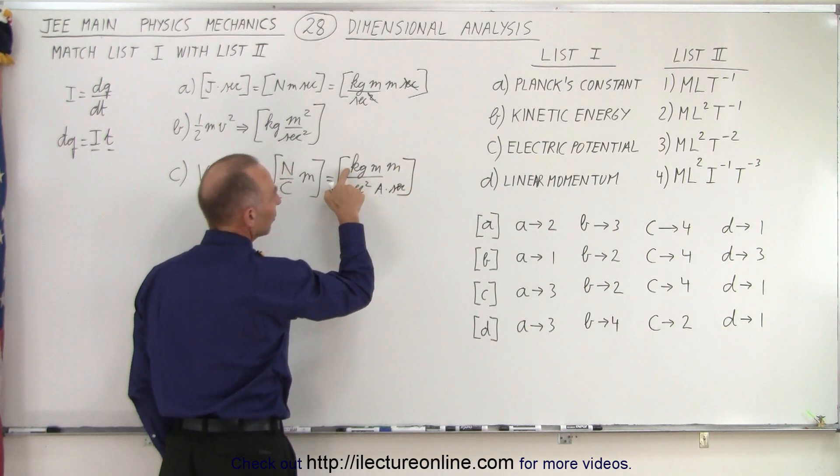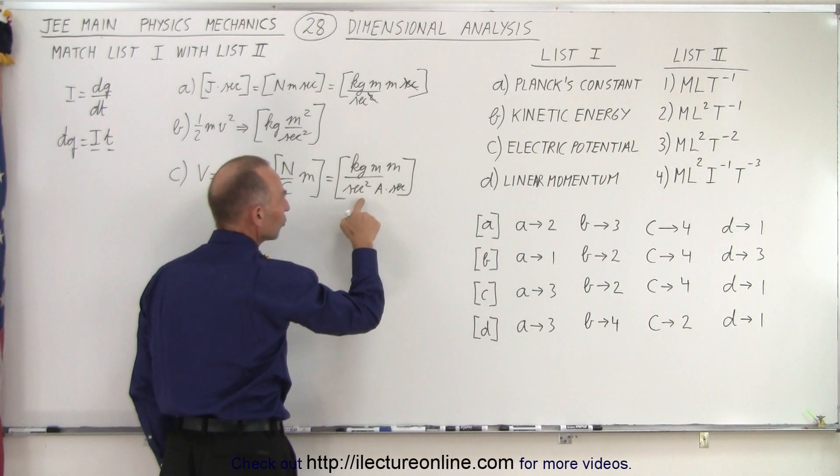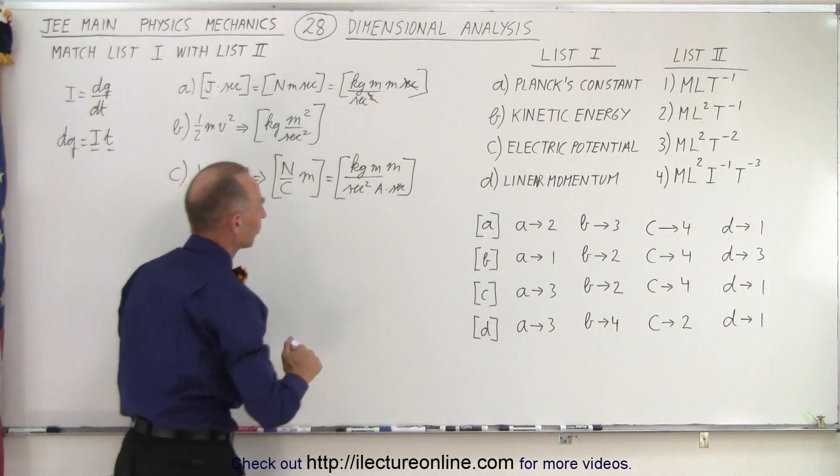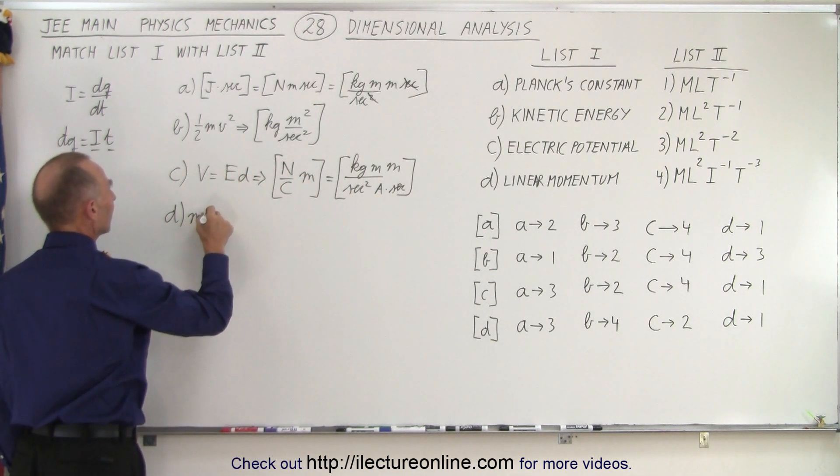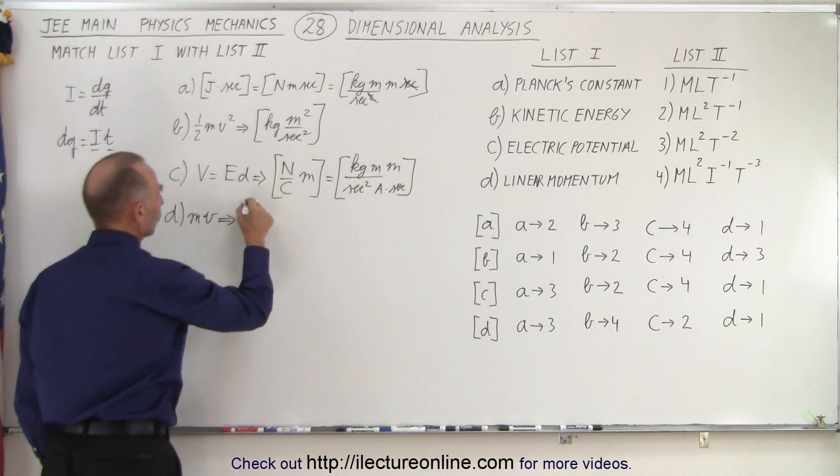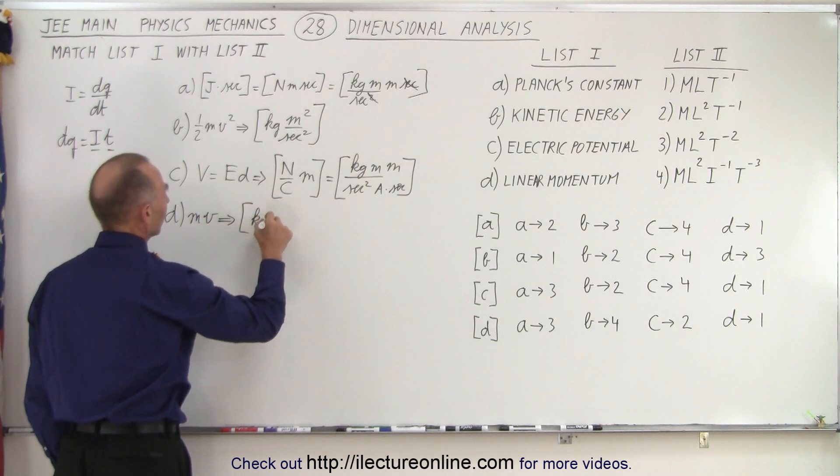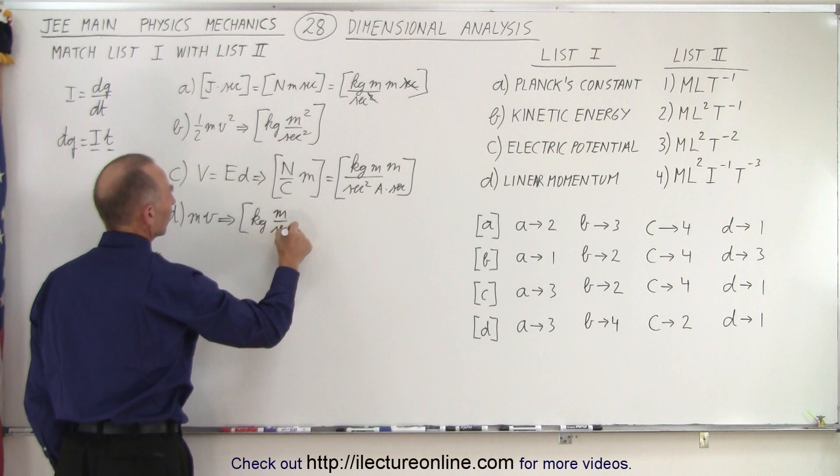So notice we end up with kilograms meter squared per second cubed times amps per current. And finally, linear momentum, that's m times v, so the units are going to be kilograms times meters per seconds.